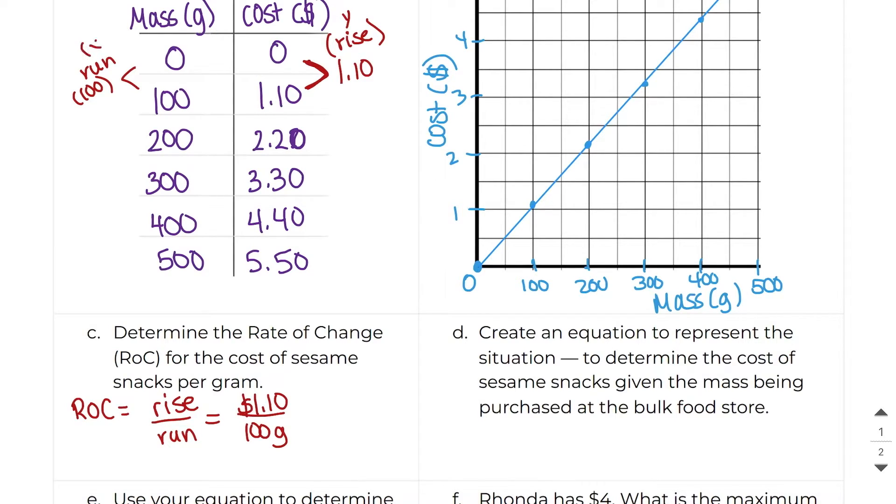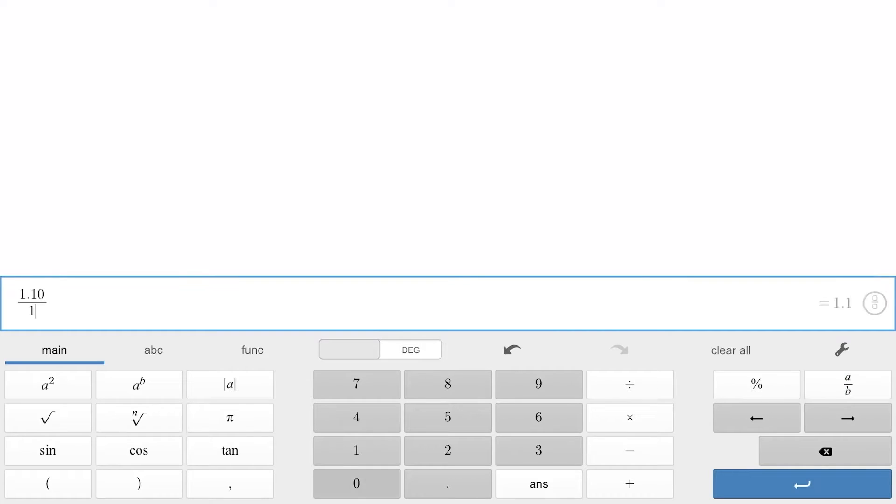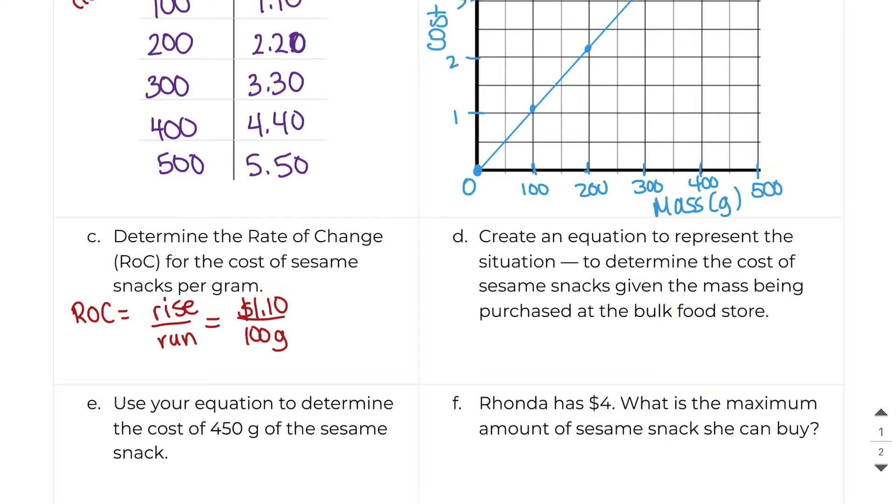Remember, the run is X, and this is our X right here. And when we divide 110 by 100 grams, $1.10 divided by 100, I get 0.011. And at this point in time, we do not want to round our answer. So we'll just leave it at $0.011 per gram or 1.1 cents per gram.